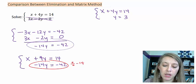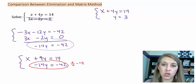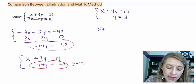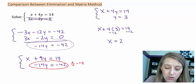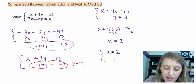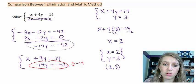Now we can stop here because we have one of our variables. To find the second variable, we plug y equals 3 back into the first equation: x plus 4 times 3 equals 14. That works out to 12, so subtracting 12 from both sides gives me x equals 2. So the overall solution is x equals 2 and y equals 3, giving the solution (2, 3).